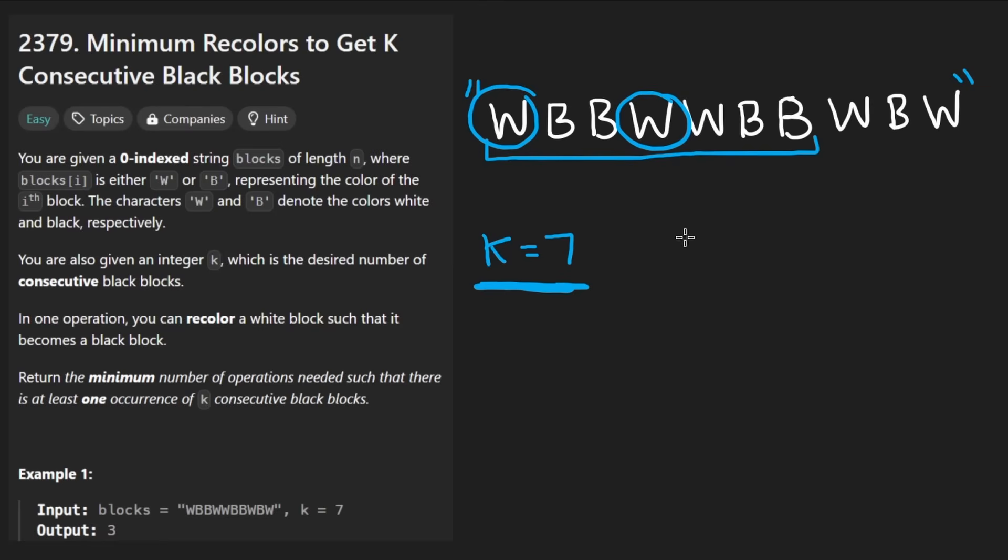So we could do that for this first window that starts at zero. We see that there are three W's in that window, so it would take three recolors to make this all black. What about the next window, this window over here that starts at the second character? Well that one has three whites as well, so it would take three recolors.